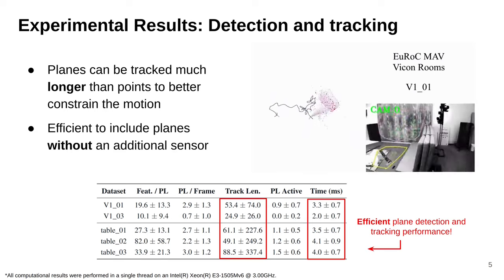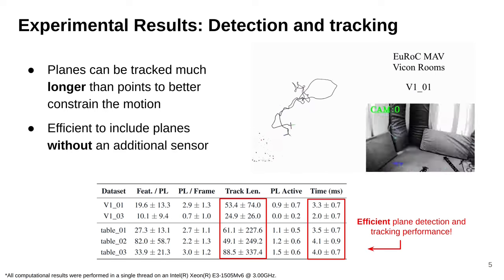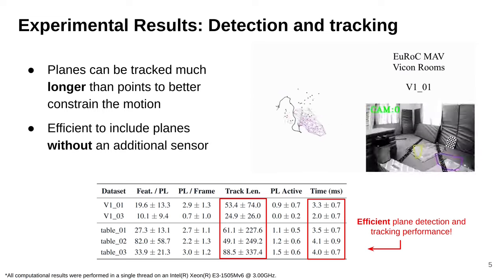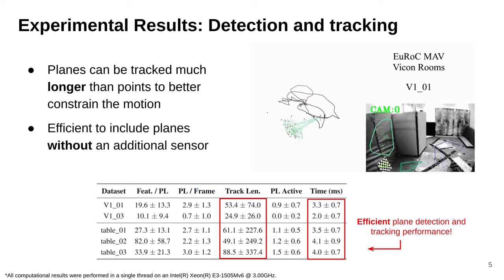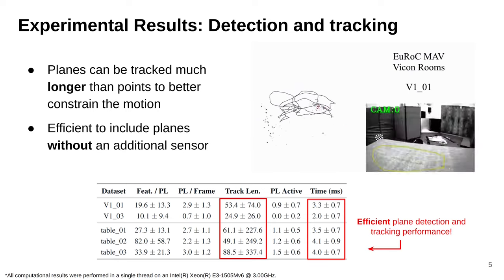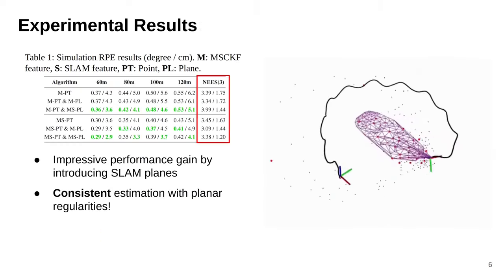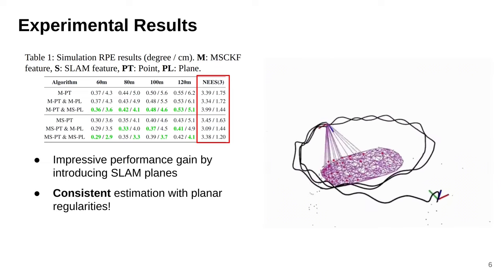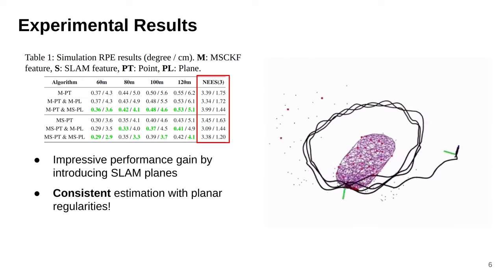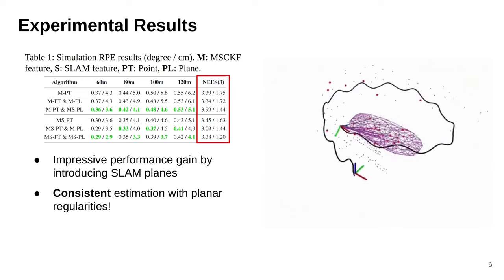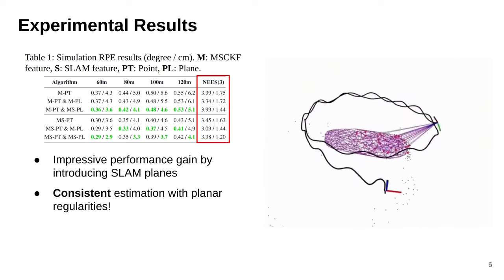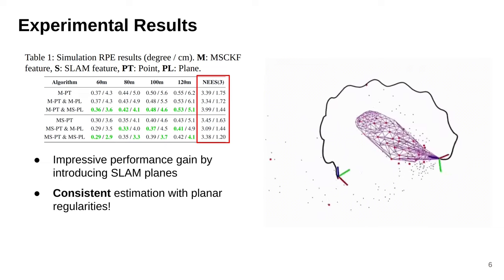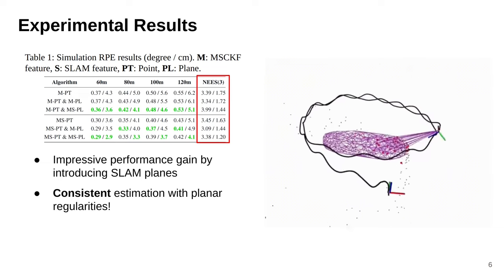We also note that for datasets with high dynamic motion such as V103, the low number of coplanar point features can limit the use of SLAM planes. The additional time for plane detection and matching is only around 2 to 4 milliseconds. We also evaluate the performance of our system in both simulation and real-world experiments. Let's first take a look at the simulation results. In the table, we report the RPE and NES values. We show impressive performance gain by introducing SLAM planes, and the system is able to perform consistent estimation with planar regularities.